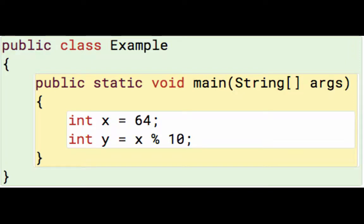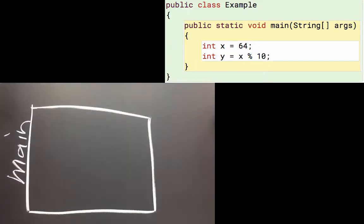When we run a class, we run the method public static void main string square bracket args. I'll draw a stack frame to keep track of our local variables, and I wrote the method name main on the side to keep track of that.